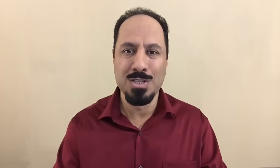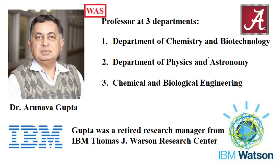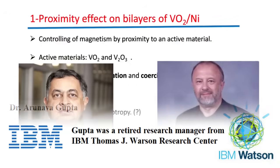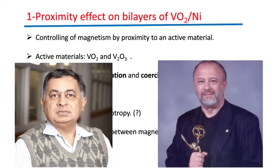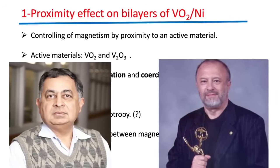The closest related work was on the proximity effects of vanadium dioxide on magnetic layers. Dr. Ivan Schuller had a number of publications on the subject. My advisor Dr. Gupta was a close friend of Dr. Schuller, but he had some doubt about his work on proximity. So he suggested I repeat the experiments and see if it works the way it was reported.